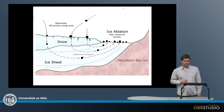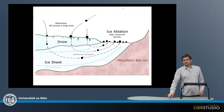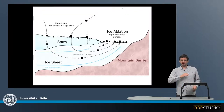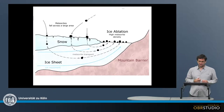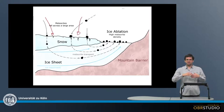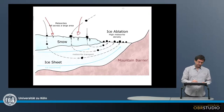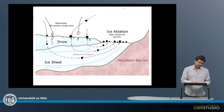Cold desert means Antarctica, which is characterized by large ice fields covered maybe by some snow. Meteorites can fall on these large ice sheets — the fall statistics in Antarctica are the same as everywhere else. When meteorites fall on the snow, they can start melting through it because they are more dense, and slowly migrate through the snow and into the ice sheet.